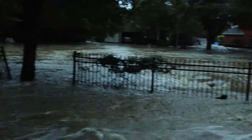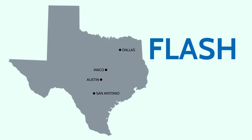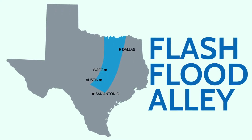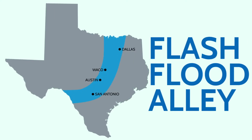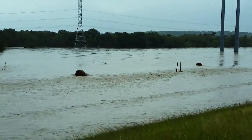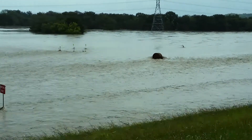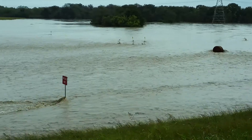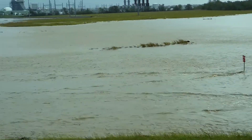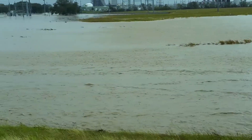Austin is in the middle of Flash Flood Alley, which is a part of Texas that runs from Dallas to Del Rio. It's an area of the state that receives extreme rainfall events. In Austin, a 100-year rainfall event is about 12.8 to 13 inches of rain in 24 hours.